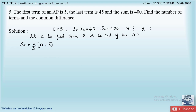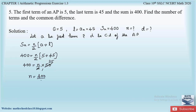Using the sum formula with the last term: Sn = (n/2)(a + l). Substituting: 400 = (n/2)(5 + 45) = (n/2)(50). Simplifying: n = 400/25 = 16.